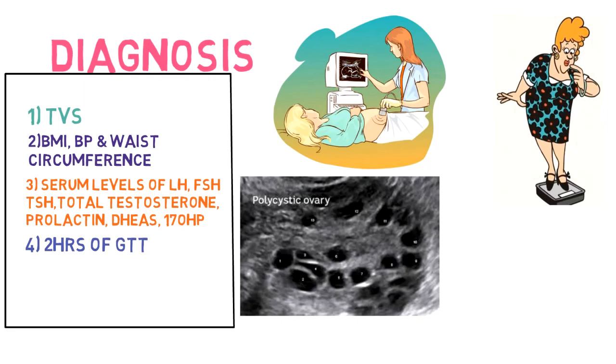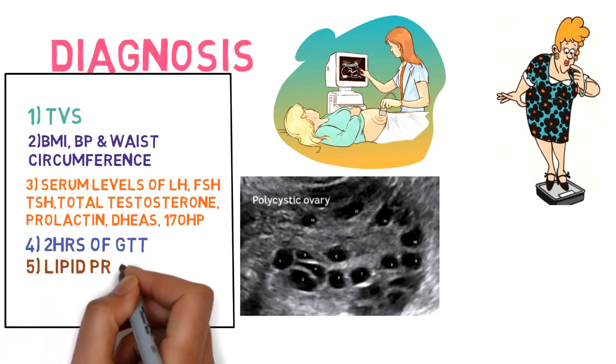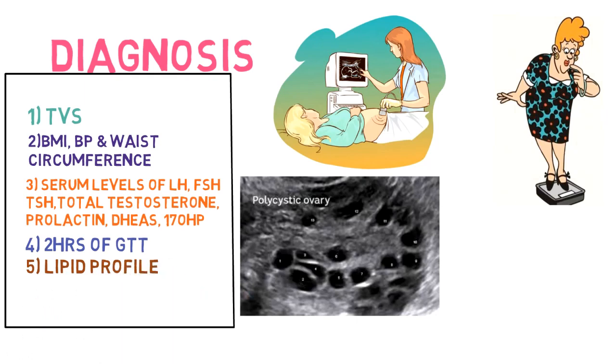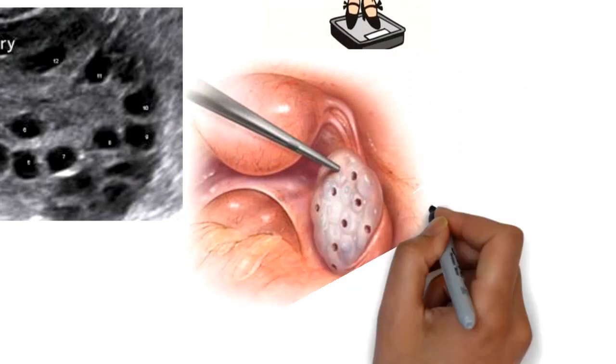Two-hour glucose tolerance test to check the severe insulin resistance and lipid profile. If there is increased insulin, there may be high triglycerides level. Laparoscopy, which may give a bilateral polycystic ovarian picture.